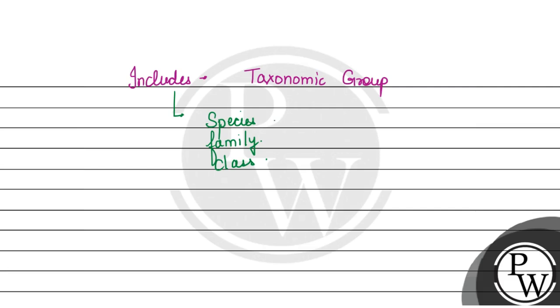Species is the lowest unit of classification, whereas if we talk about the kingdom, it is the highest unit of classification.